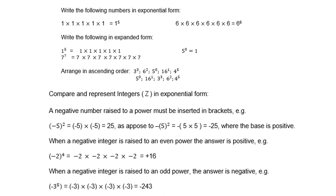When a negative integer is raised to an even power, the answer is positive. For example, negative 2 to the power of 4 — which is even — will give you a positive 16. Or, when the negative integer is raised to an odd power, like negative 3 to the power of 5, it will give you negative 243.